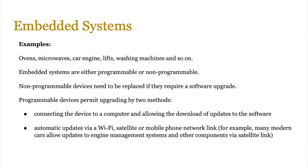Embedded systems don't always need to be programmable — sometimes they can be non-programmable, meaning you just use it and don't change the program. Non-programmable devices need to be replaced if there's a software upgrade, because we can't change their program. Programmable devices permit upgrading, and this normally happens via two methods: connecting the device to a computer and downloading the update yourself, or using automatic updates via Wi-Fi, satellite, or a mobile phone connection.